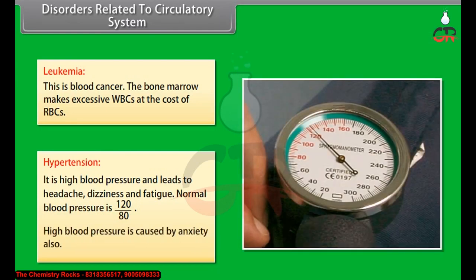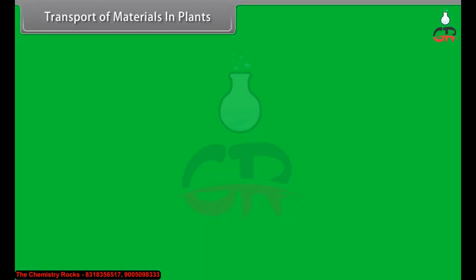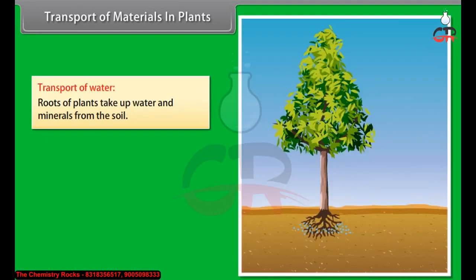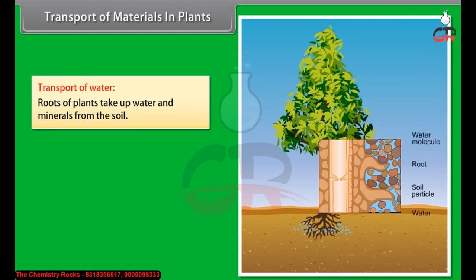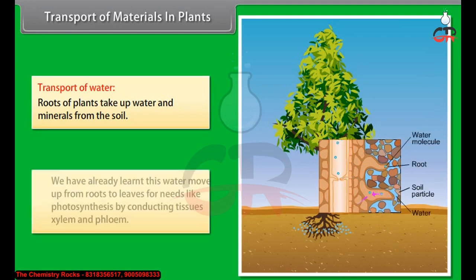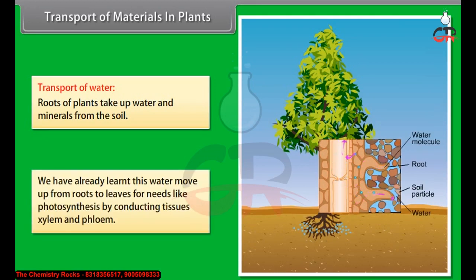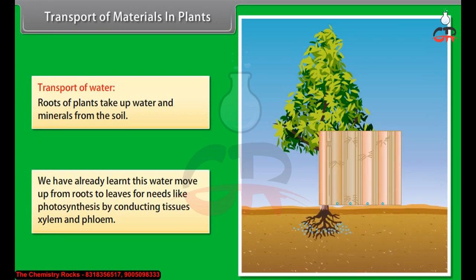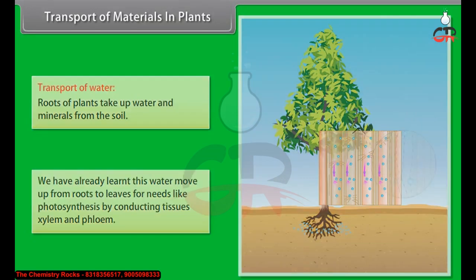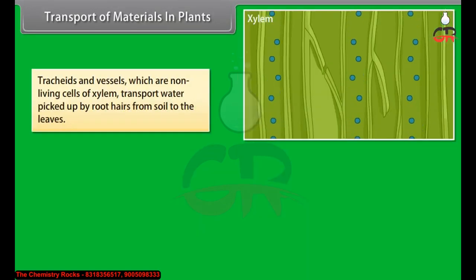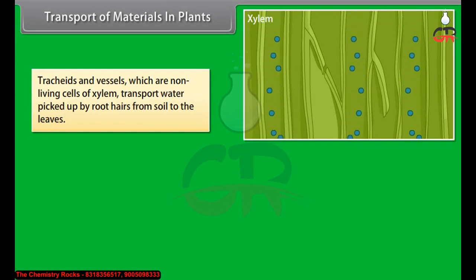Roots of plants take up water and minerals from the soil. This water moves up from roots to leaves for needs like photosynthesis through conducting tissues — xylem and phloem. Tracheids and vessels, which are non-living cells of xylem, transport water picked up by root hairs from the soil to the leaves. Transport of food material from leaves to other parts of the plant is called translocation; this food may be stored in fruits, stem or roots.